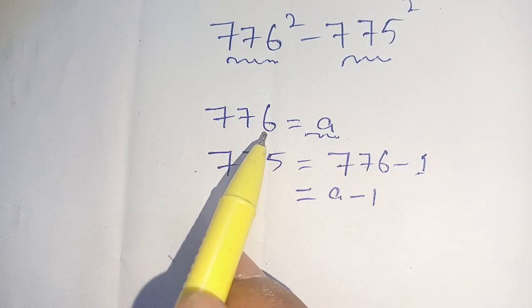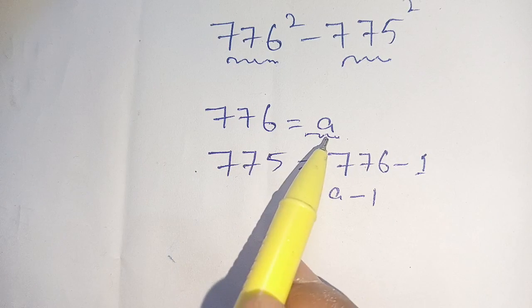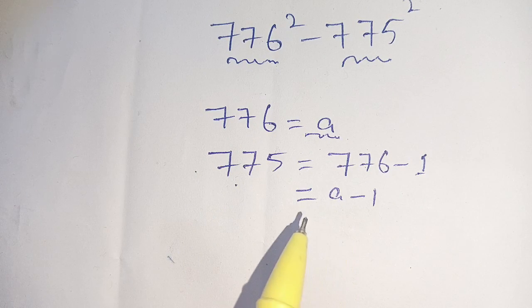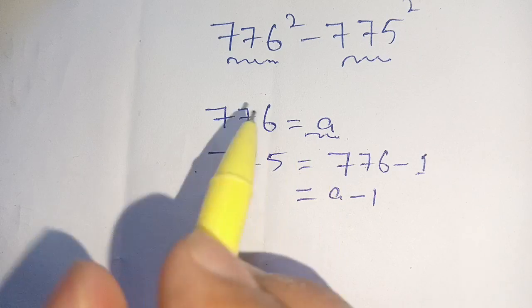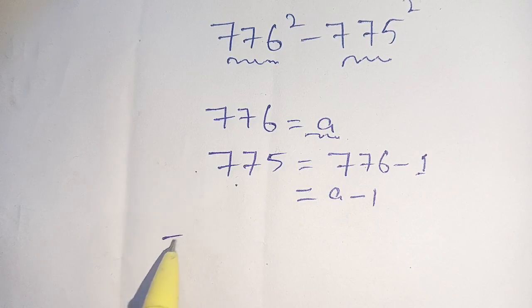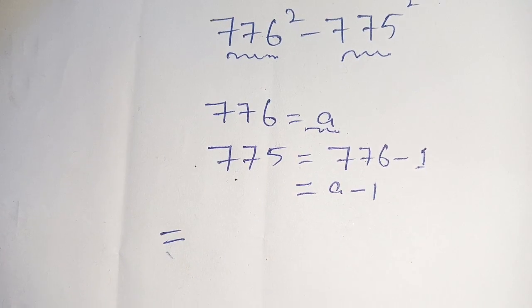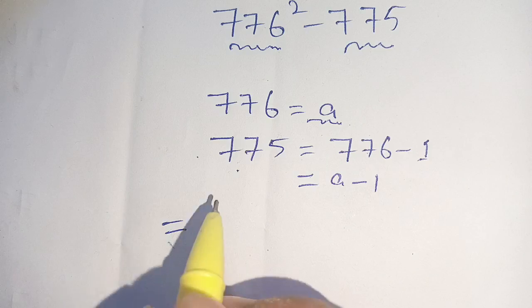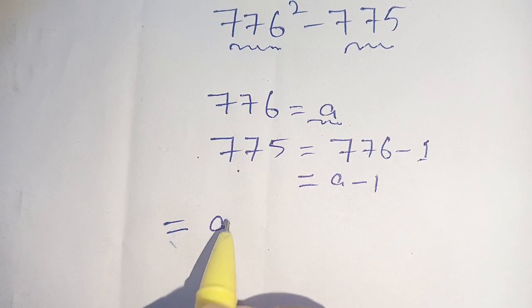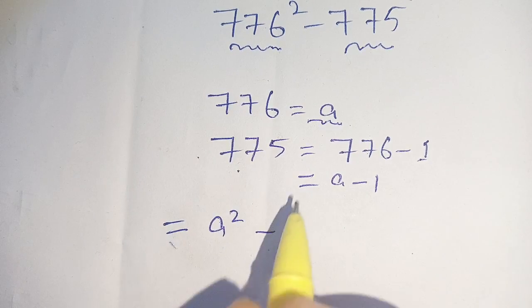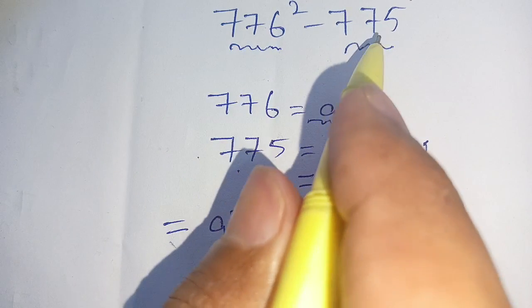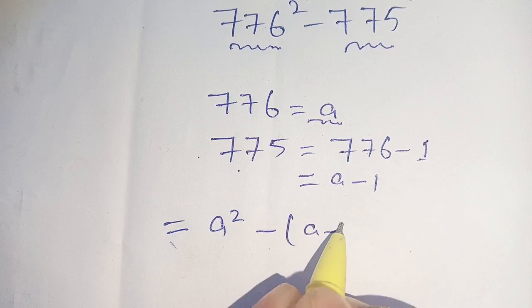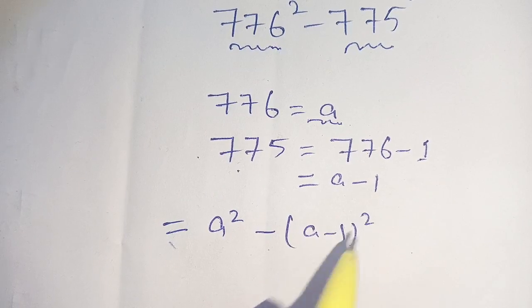Now we replace 776 by A and 775 by A minus 1. Thus our problem will become A square minus, and 775 square means A minus 1, whole square.